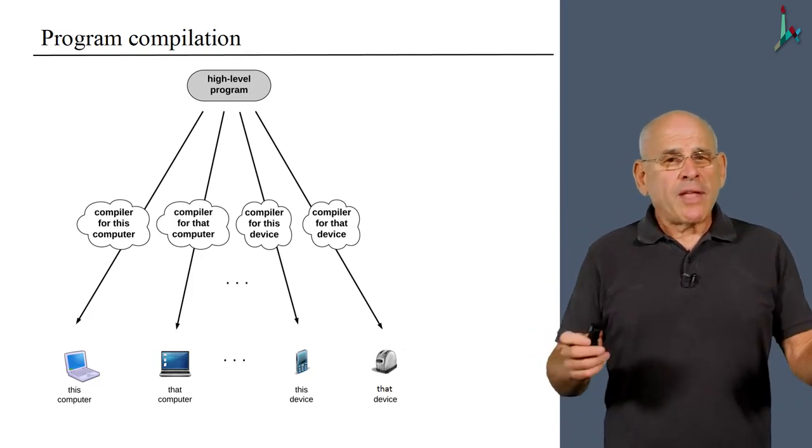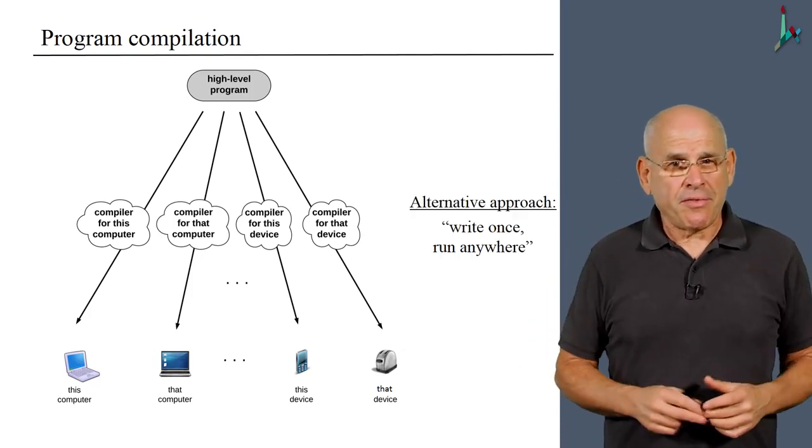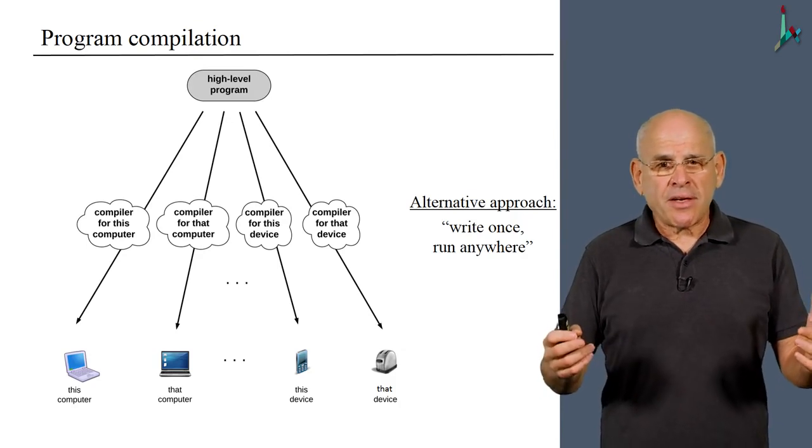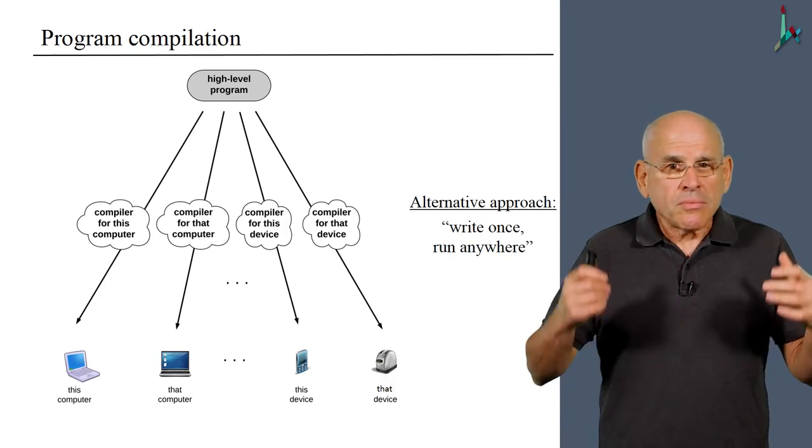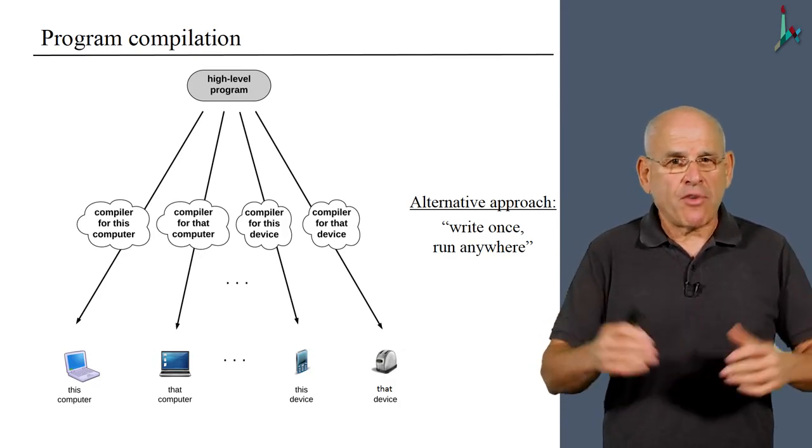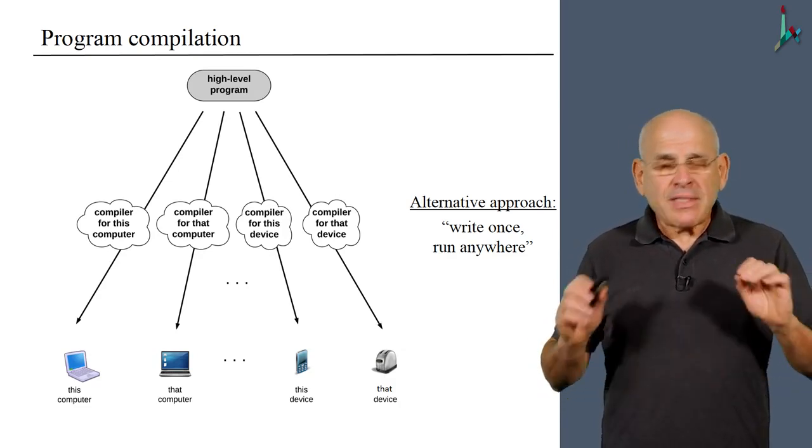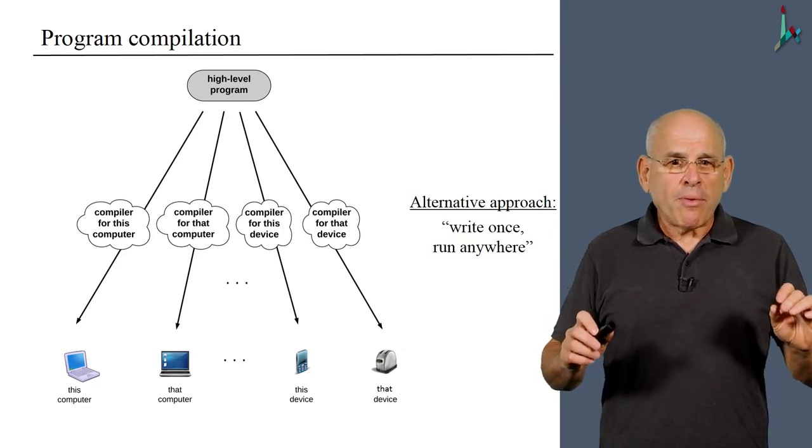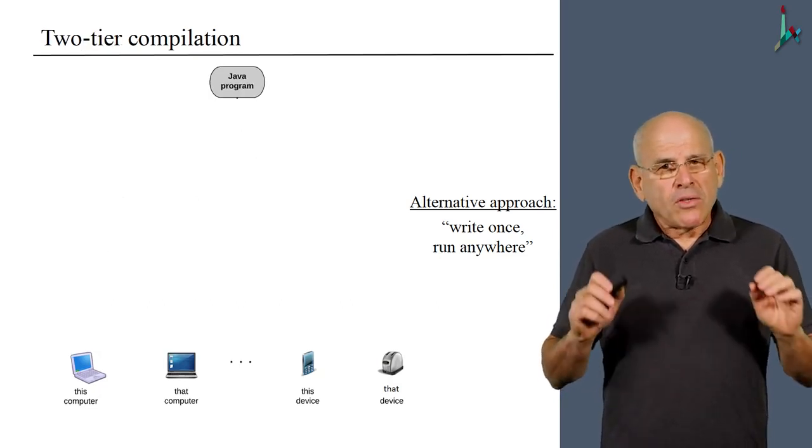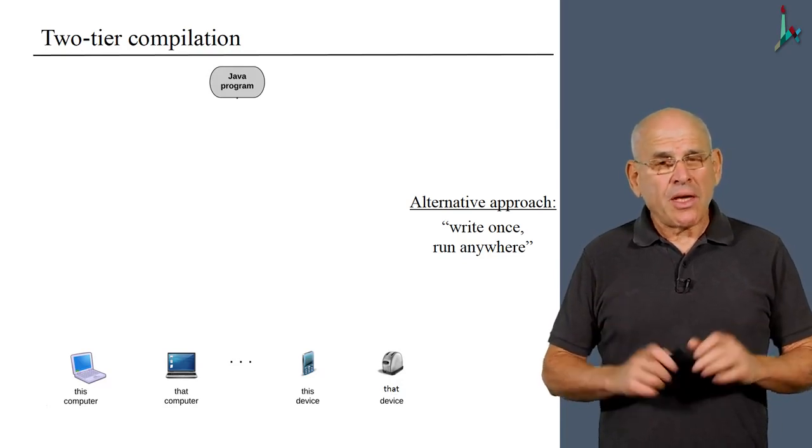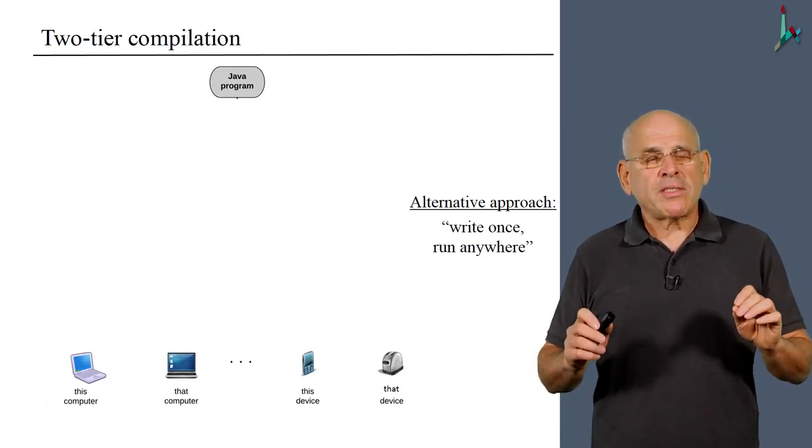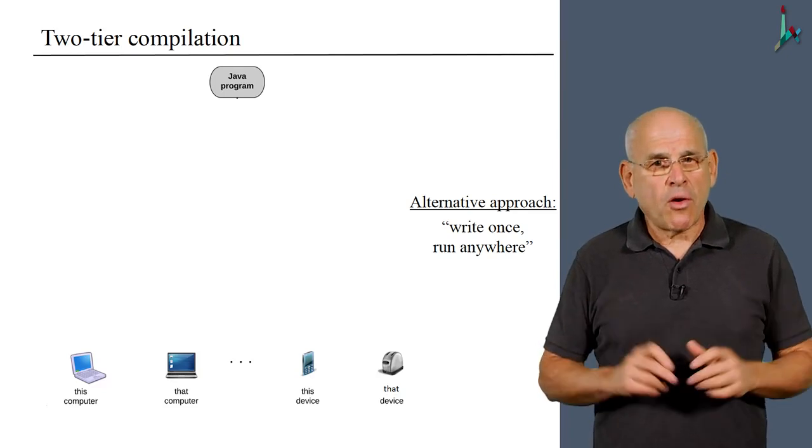So I'm pleased to tell you that there is an alternative. The battle cry of this alternative is write once, run anywhere, as opposed to write once and fix everywhere. The best example of this approach is probably Java. Now Java does not compile all the way down to machine language. Instead, Java employs something called two-tier compilation.